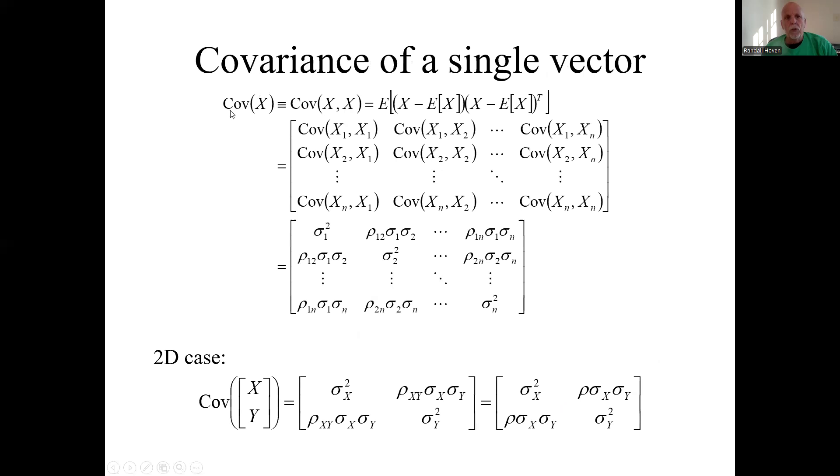You could talk about the covariance of a single random vector—it's that same covariance with itself. So its definition is this thing. Here's how the matrix lays out. If you go back to covariances and correlation coefficients, it would look like this in terms of standard deviations and correlation coefficients.